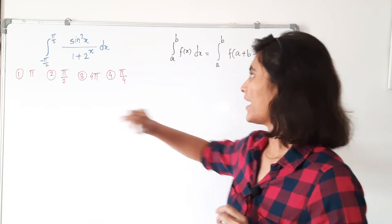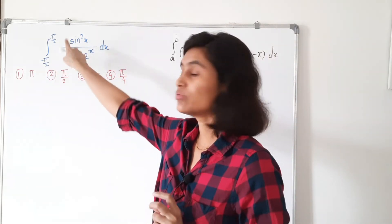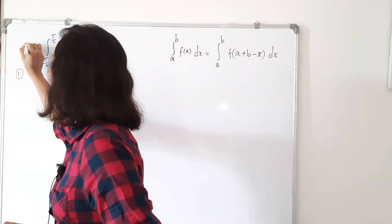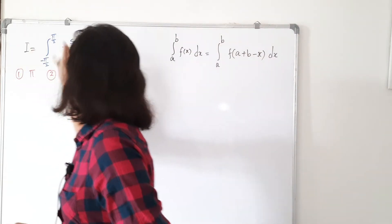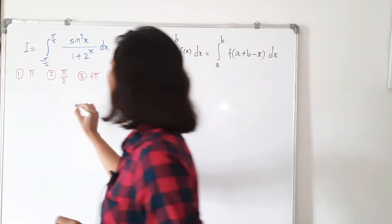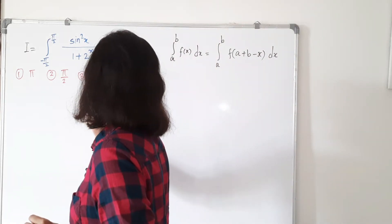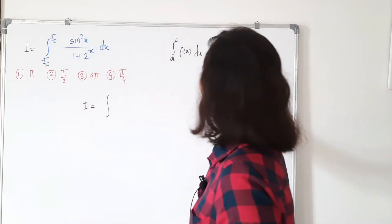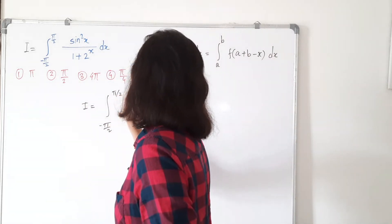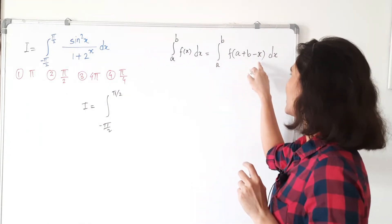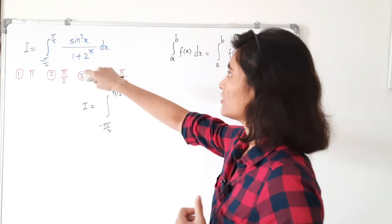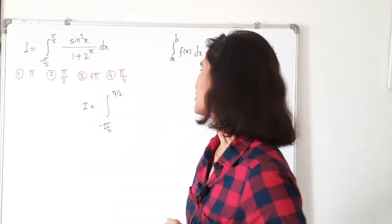Here we have a equal to minus π/2 and b equal to π/2. To solve this integral, let's call it I. By using this formula, I equals the integral from minus π/2 to π/2, and here a plus b minus x is just minus x. So in the function, just replace x by minus x.